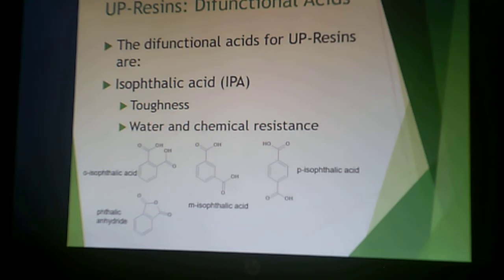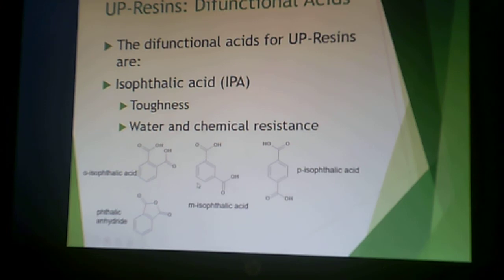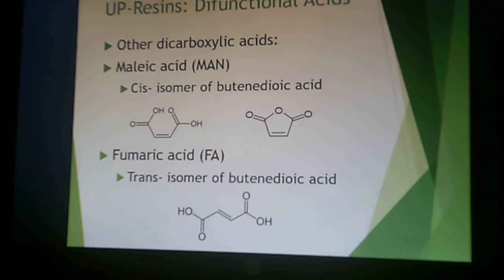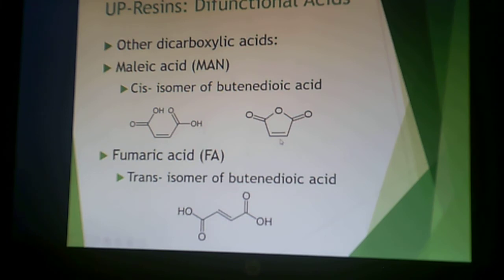Diacids are another portion of this. Typically isophthalic acid is used — this provides toughness and water and chemical resistance, but doesn't provide olefinic unsaturation. So these are really terpolymers, where the ring structures make it tougher, stronger, and give better resistance to water and chemicals. Then another dicarboxylic acid is added — this is where olefinic unsaturation comes in. Typically maleic acid or maleic anhydride is used. Maleic acid is the cis isomer of butenedioic acid; condensed, it closes the ring to give the anhydride. You can also use fumaric acid, the trans isomer, or you can make fumaric acid from maleic acid. This is where you get your unsaturation, which is your olefinic unsaturation that can then free-radically polymerize later in a second step.